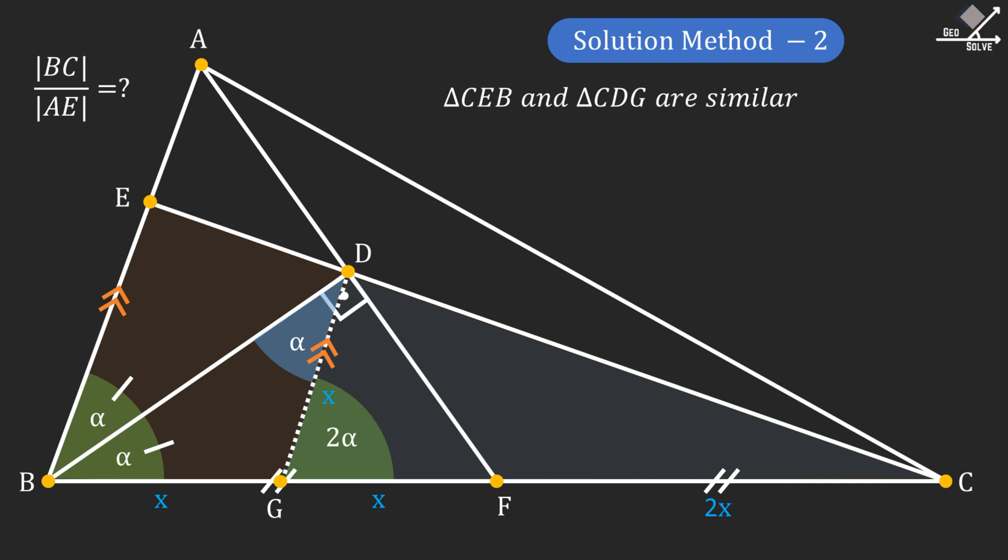And from similarity, we can write CG over CB equals DG over EB. If we put the values in, we will have 3X over 4X equals X over EB. And from here, EB will be calculated as 4X over 3.